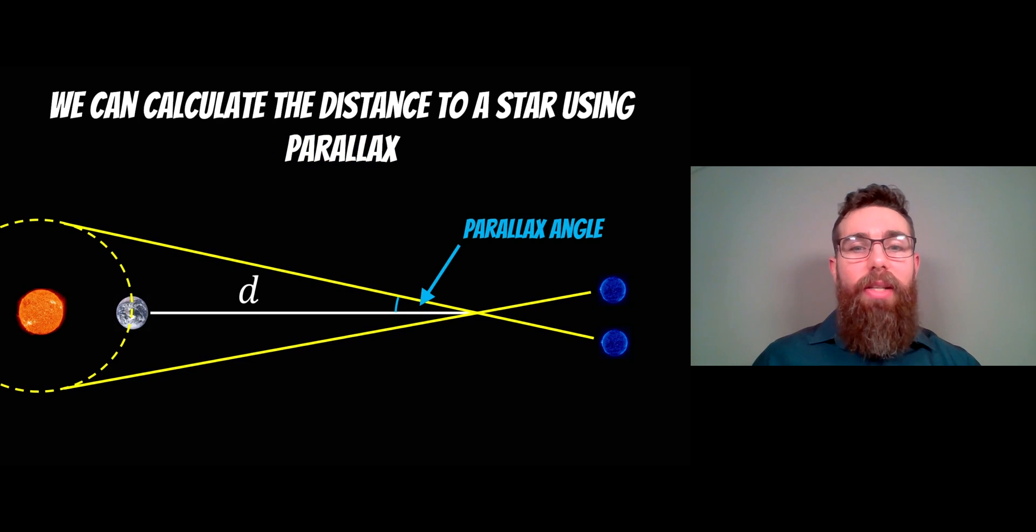Now we can do that using parallax. So if we take measurements of a star, positions of a star in the sky six months apart, which is half an orbit of the earth, then that's the maximum parallax angle we're going to get.